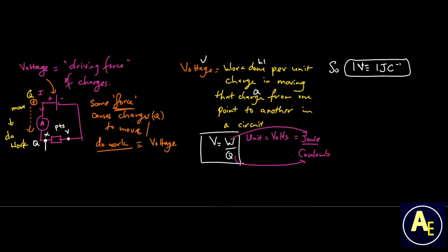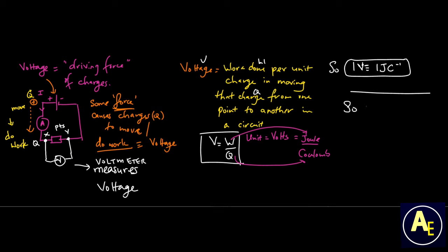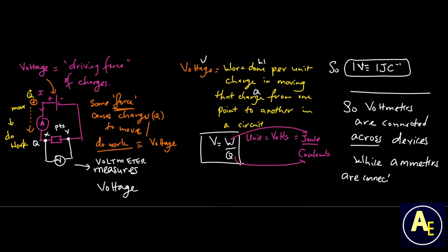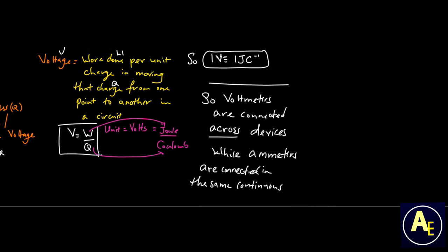It is also important to remember that voltage is measured across a device from one point to another. A voltmeter measures voltage and is placed in parallel to, or across, a load. Voltmeters make their own loop, whereas ammeters are connected in series to a load, or within the same continuous loop.